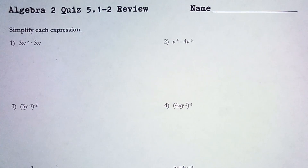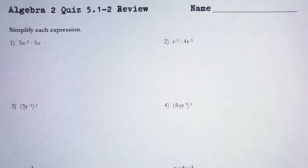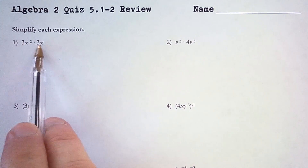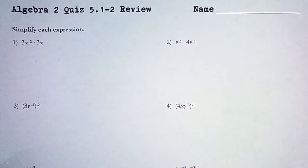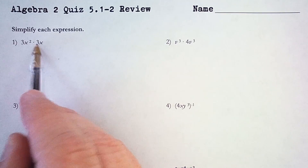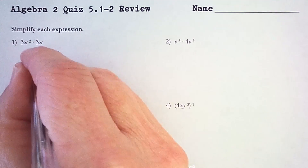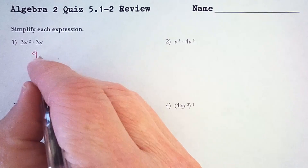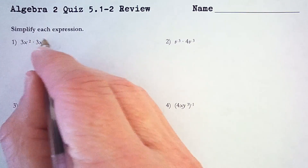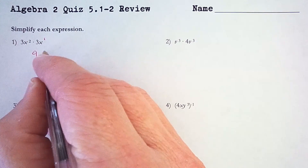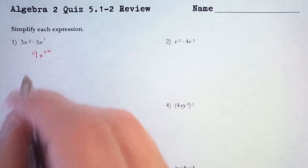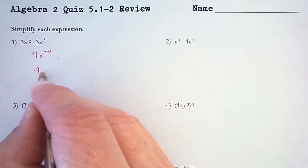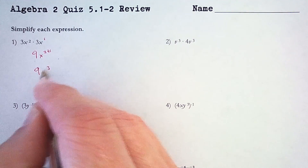In this video we are going to simplify expressions with exponents. First we've got 3x squared times 3x. What we can do is multiply the 3 by the 3 and get 9. And then when we multiply the x's, we add the exponents 2 and 1, so we're doing 2 plus 1. So that's 9 times x to the 3rd power.